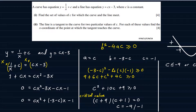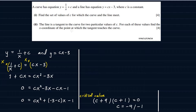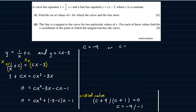Let's go on to part 2. The line is a tangent to the curve for two particular values of c. For each of those values, find the x-coordinate of the point at which the tangent touches the curve. The two particular values of c are −9 and −1, which we already obtained in part 1. So c = −9 or c = −1. We're going to substitute, starting with c = −9.